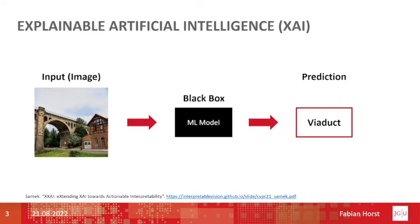We can use already pre-trained machine learning models like neural networks for image classification. In our example, the model predicts the class viaduct. On one hand, this is already a great achievement. However, one of the downsides of current state-of-the-art machine learning models is the black box nature, which means that the user cannot easily understand why the prediction was made by the model.